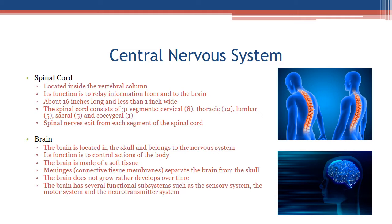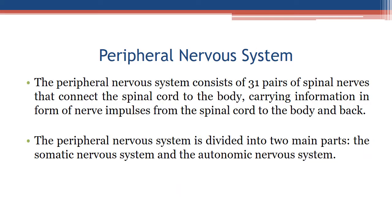Brain: the brain is located in the skull and belongs to the nervous system. Its function is to control the actions of the body. The brain is made of soft tissue. Meninges are connective tissue membranes that separate the brain from the skull. The brain does not grow but rather develops over time, and has several functional subsystems such as the sensory system, the motor system, and the neurotransmitter system.